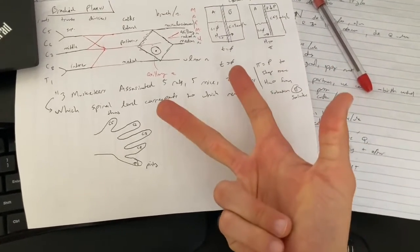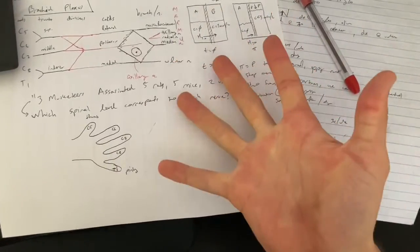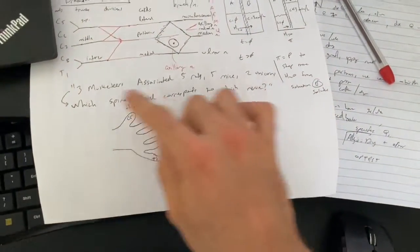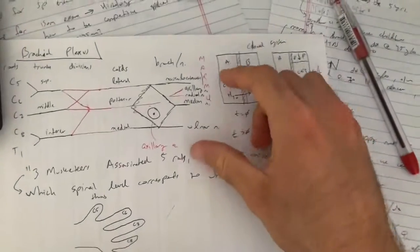So you've got the three musketeers assassinating the five rats, five mice, and two unicorns. You do that with your hand, remember this mnemonic, and then you'll be able to recall the mappings.